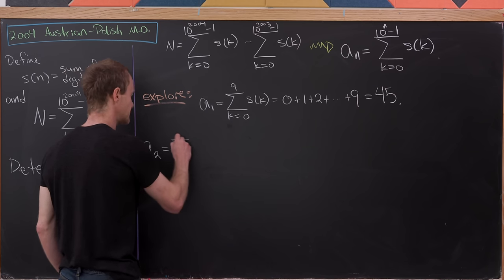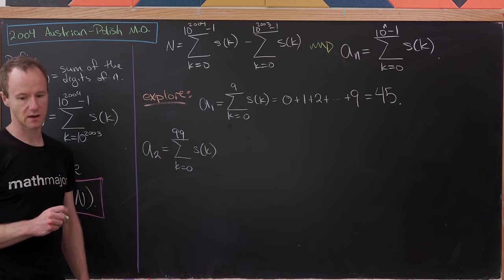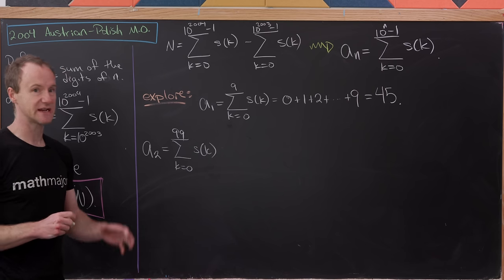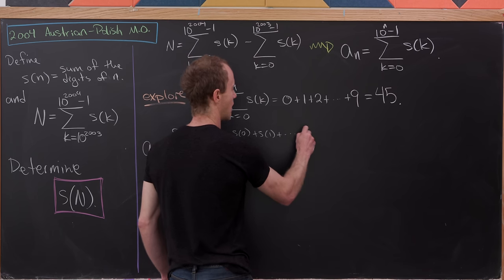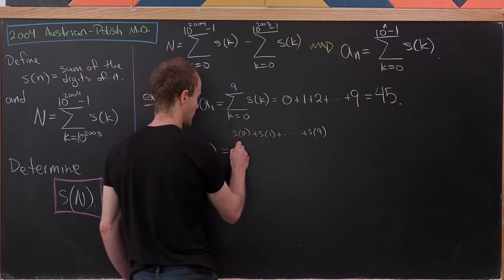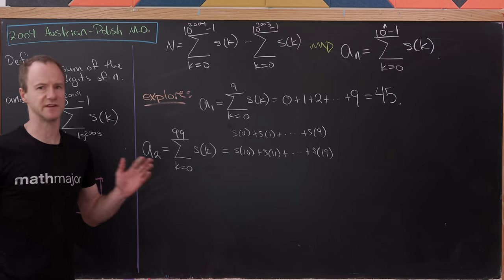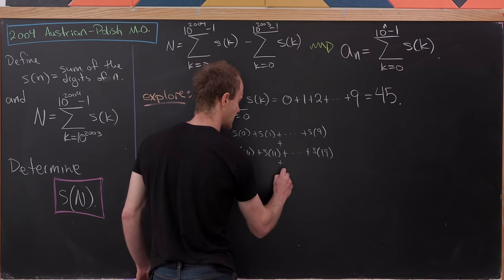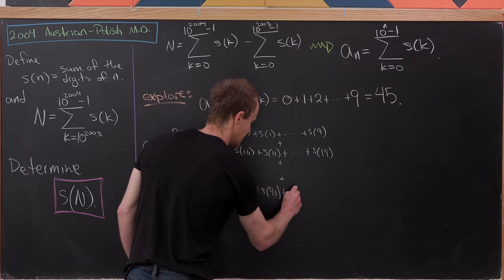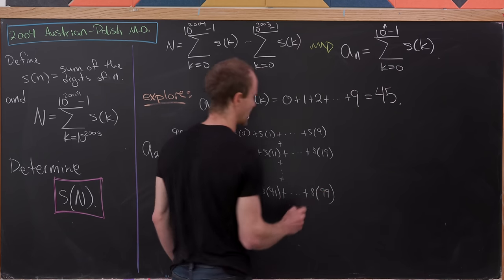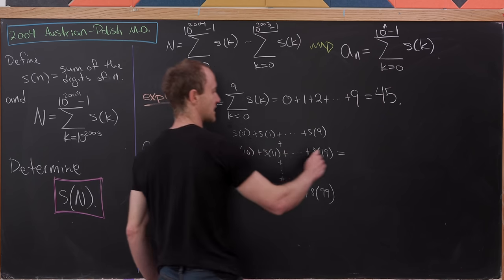Now let's look at A_2, which is the sum as k goes from 0 to 99 of S(k). If we break it into chunks of 10, it won't be so bad. We'll have S(0) + S(1) + ... + S(9) for the one-digit part, then S(10) + S(11) + ... + S(19), and so on down to S(90) + S(91) + ... + S(99). The first line is simply equal to 45.